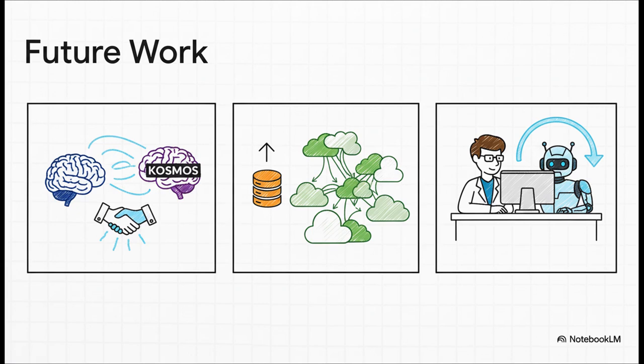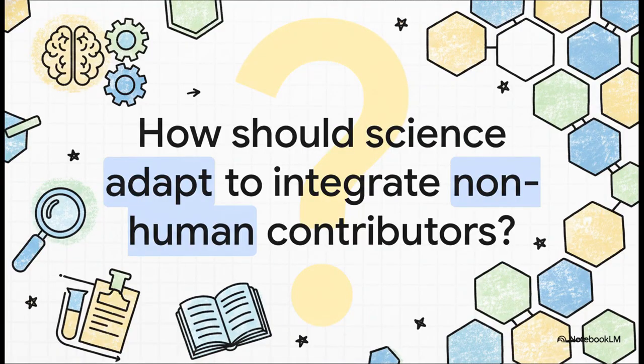Future work will focus on three key areas. First, training what the authors call scientific taste to better align the system's analyses with expert intuition. Second, improving scalability to handle larger and more diverse data types. And third, developing interactive frameworks to create a true scientist-in-the-loop collaborative model.